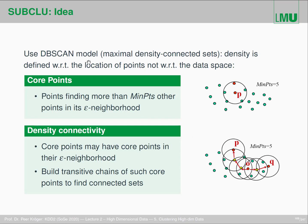The method is called SUBCLUE, and the idea is to use the DBSCAN model — the idea of maximal density-connected sets. Density is now defined not by fixed grid location, but adaptive to the location of the points via epsilon neighborhoods. We look around each point within distance epsilon, count how many points are in this epsilon neighborhood, and if there are more than minPTS points, this point is a core point.